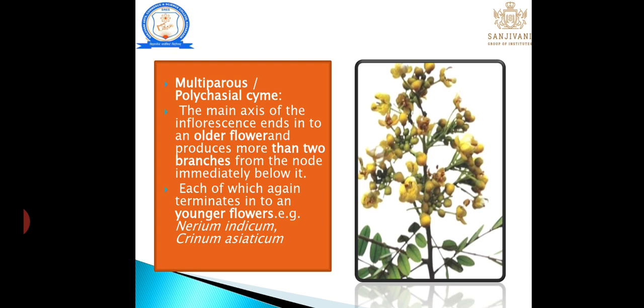In multiparous (polychasium): the main axis of the inflorescence ends in an older flower, then produces more than two branches, and from the node immediately below each of which terminates into a younger flower — the peduncle terminates into two branches and from the nodal regions many flowers are produced, hence it is known as polychasium.